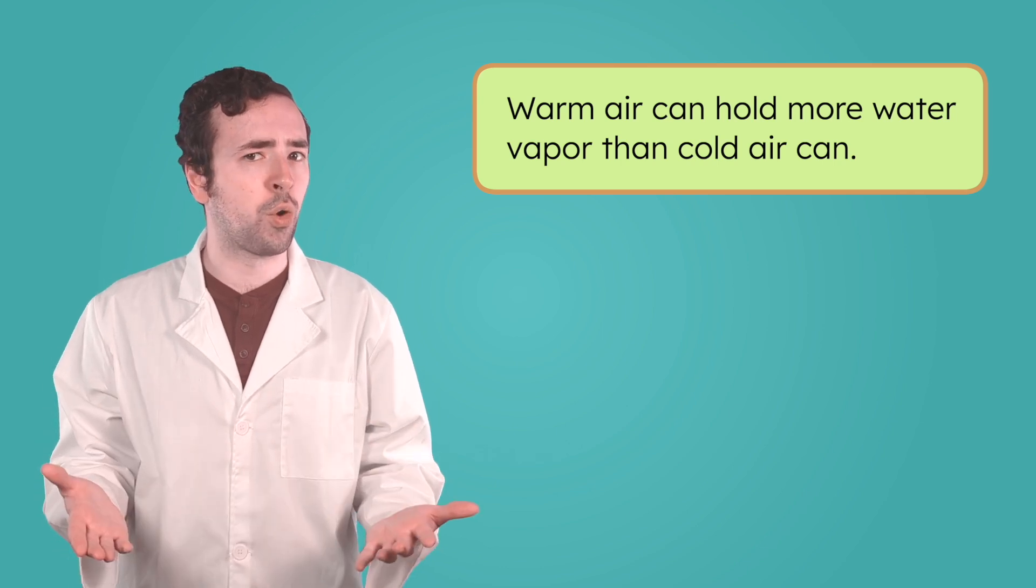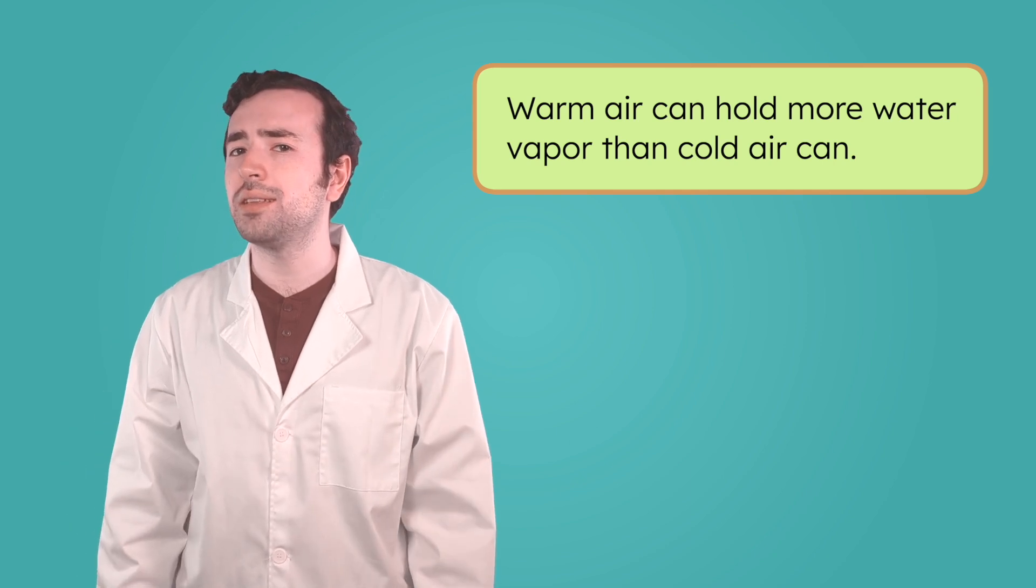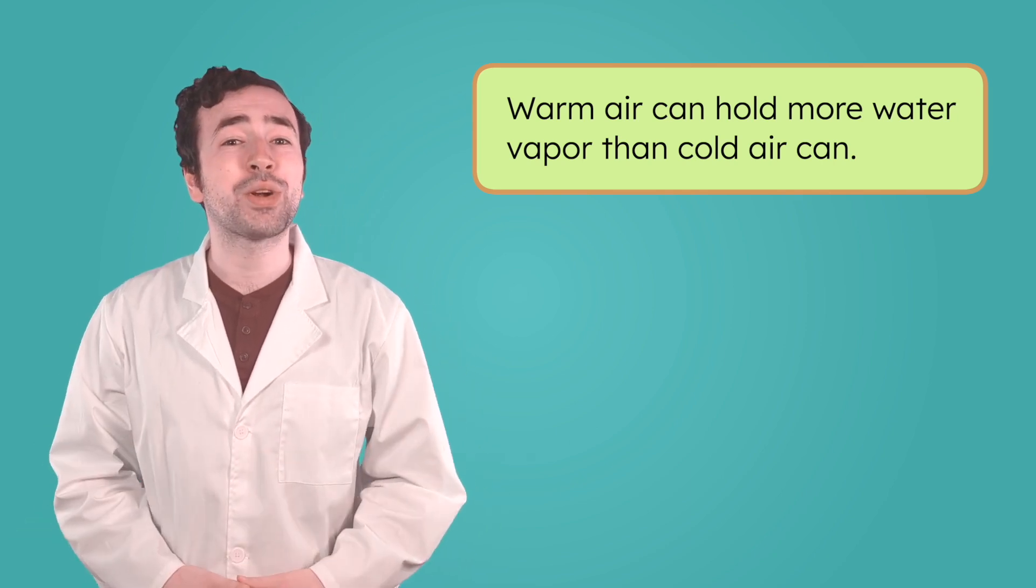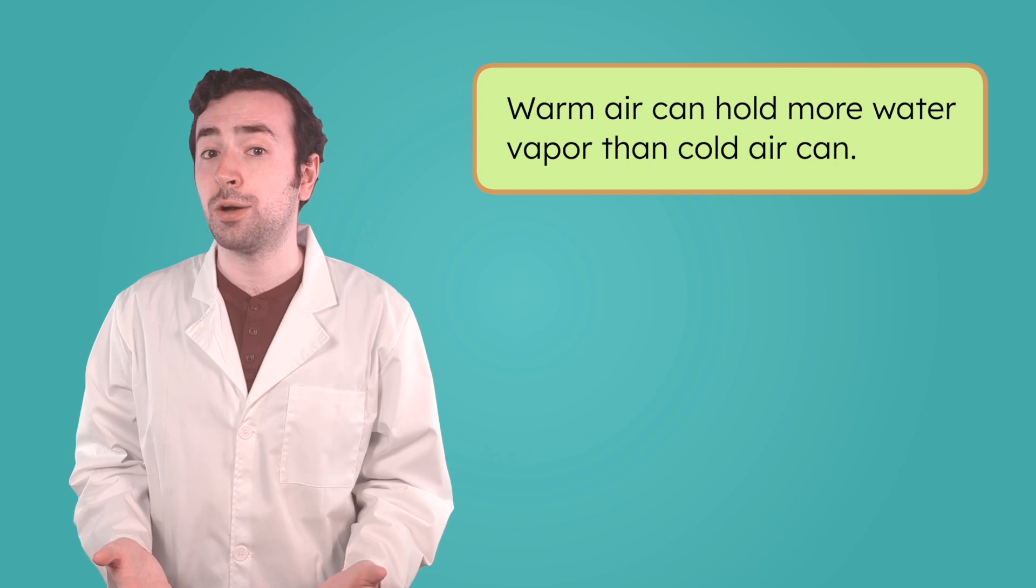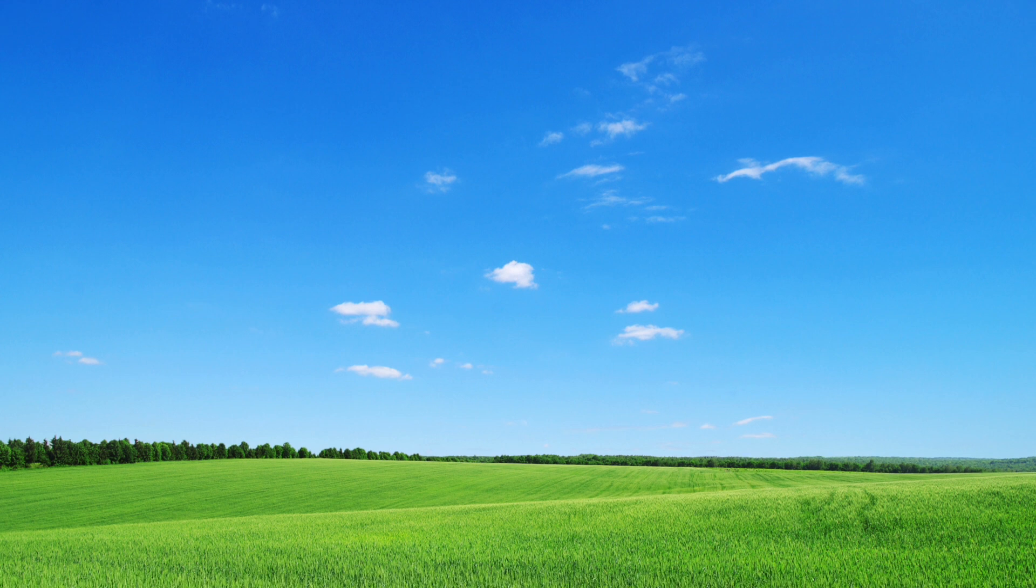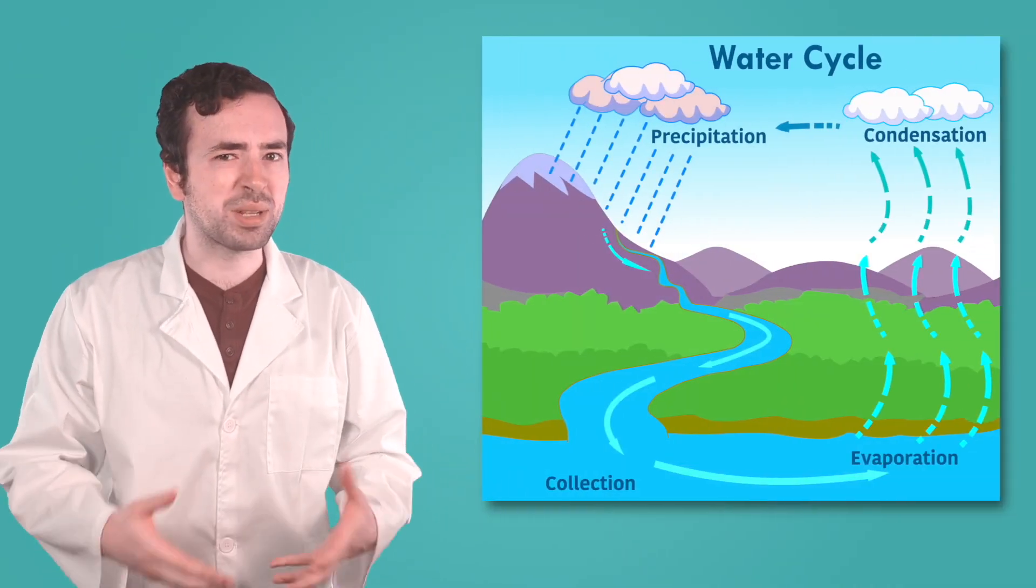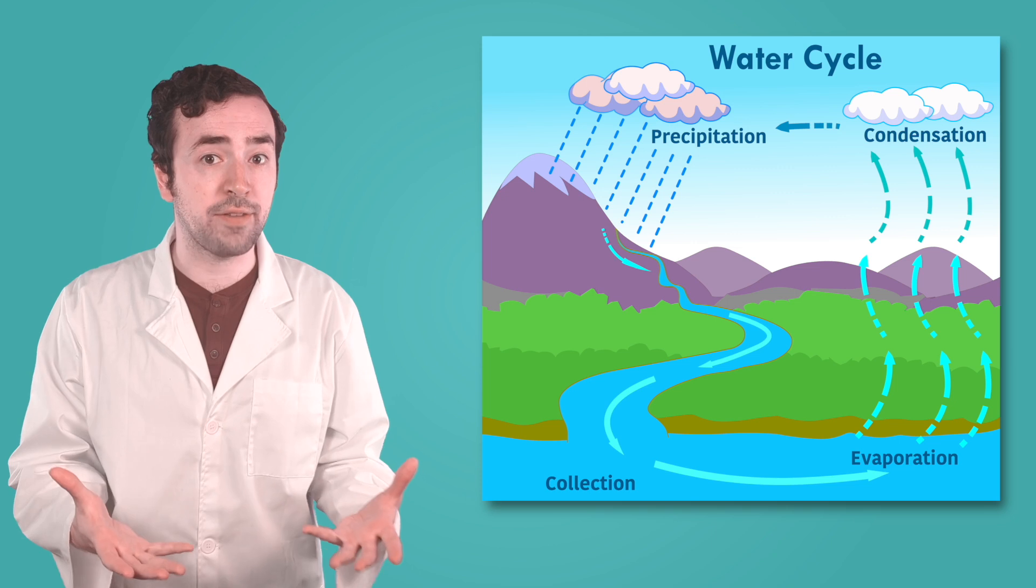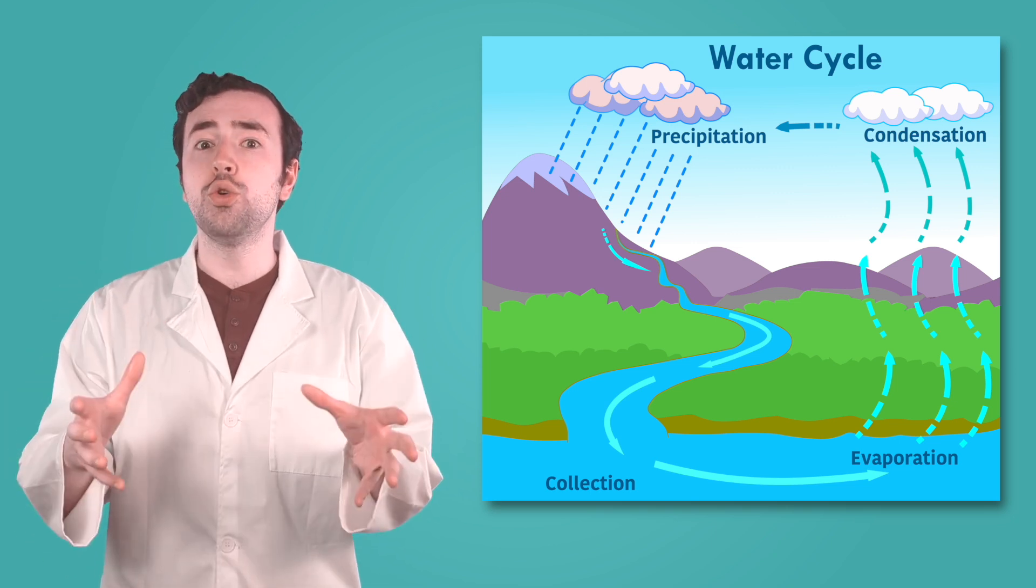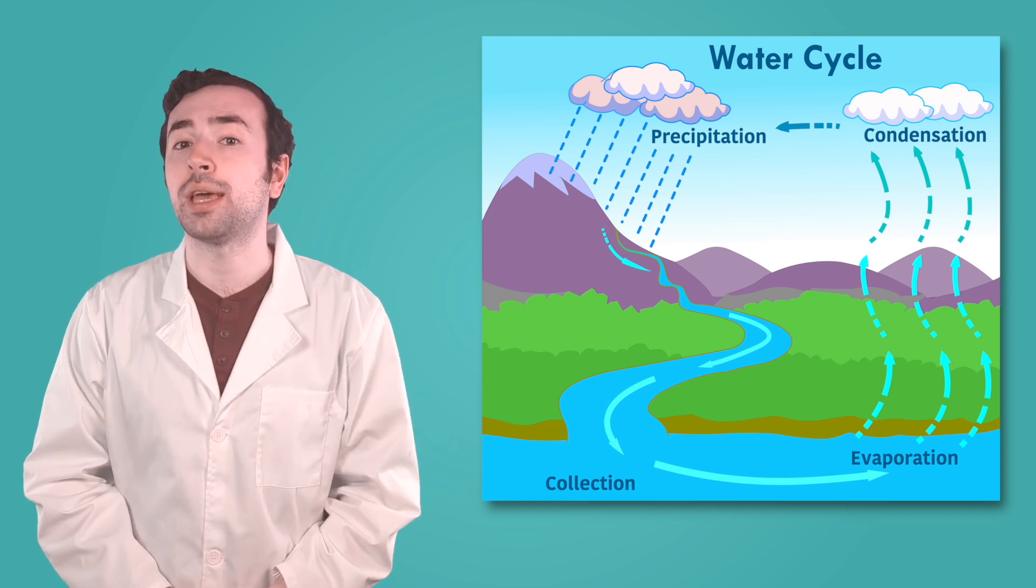And what does warm air do? It rises. As humid air rises into the atmosphere and cools down, the water vapor condenses and forms clouds. The more humid the air is, the more water vapor there is to form clouds. When the air in the atmosphere is less humid, fewer clouds can form, and the sky stays clearer. And we know that as more and more water droplets gather inside a cloud, the cloud gets heavier. When the droplets become too heavy to stay floating in the air, they fall back down to earth as precipitation.